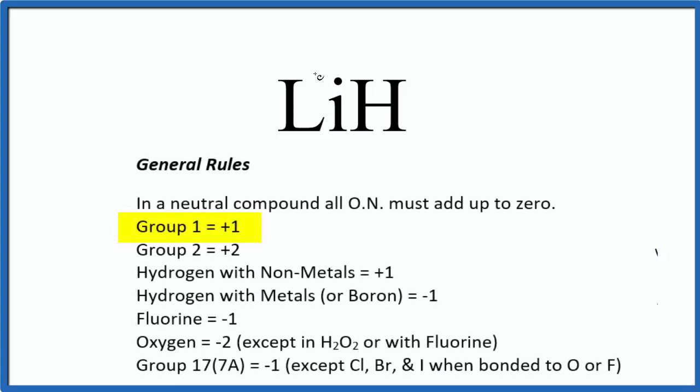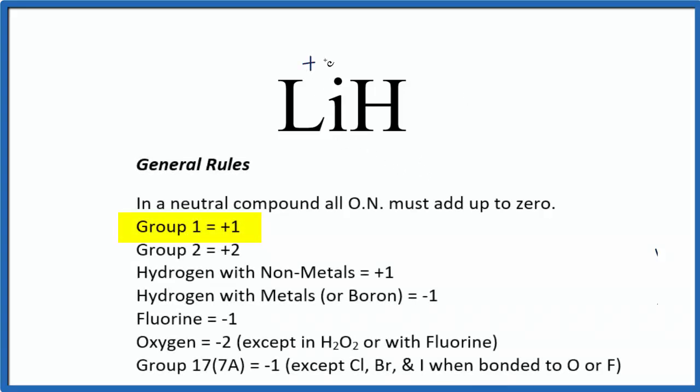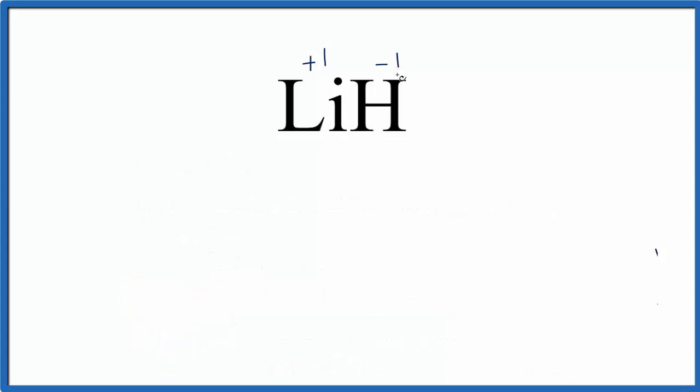Elements in group one, like lithium, they have a plus one charge, so we know lithium is plus one. And if it's going to add up to zero, that means the hydrogen is going to have to be a negative one. So in this case, the hydrogen bonded to a metal, this lithium here, has a negative one oxidation number.